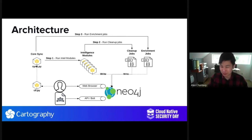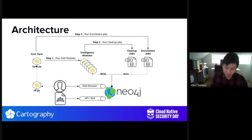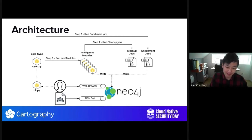This last box on the right for enrichment jobs — after we have all this data in the graph, we can perform additional analysis and additional enhancements to that data. This is another scenario of why it's useful to represent the data in the way that we have. And I'm going to show you what this looks like right now.